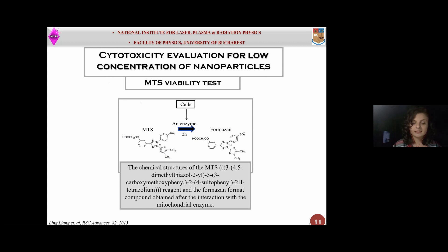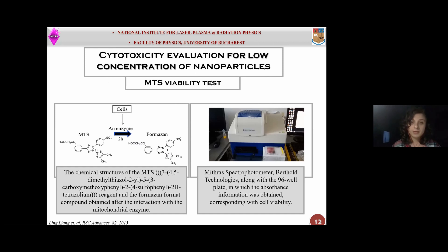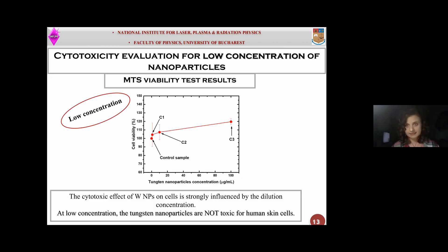This MTS represents a chemical salt that, upon interaction with an enzyme — an enzyme that exists only in viable cells — is transformed into another chemical compound called formazan. This new chemical compound can be highlighted using optical methods, because the formazan presence can be observed in wells by a change in color. Using this MTS viability test, I could observe that at low concentrations of tungsten nanoparticles, these are not toxic for human skin cells.